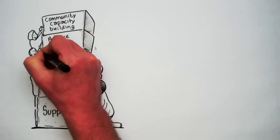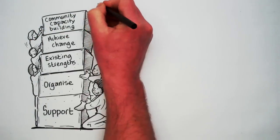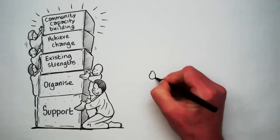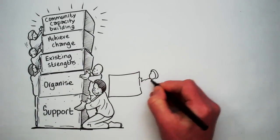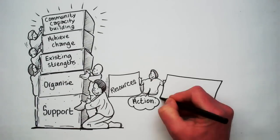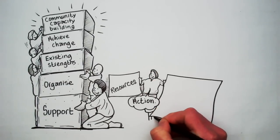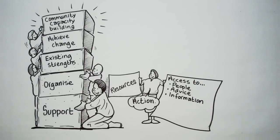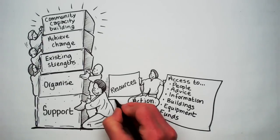So what does it look like in practice? Organised communities will usually need resources in order to take action on issues. This may be access to people, advice, information, buildings, equipment or funds, for example.